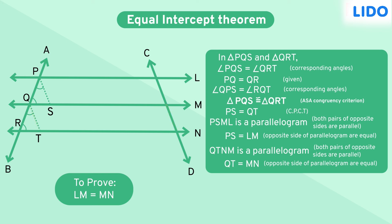Now, it's already proved that PS equals LM and PS equals QT. Therefore, it proves that LM and MN are equal sides. With that, we have proved the equal intercept theorem mathematically.